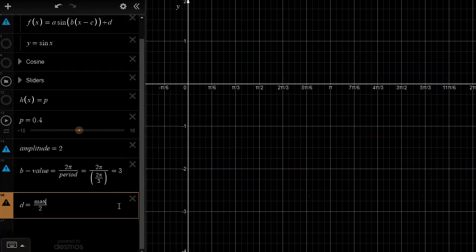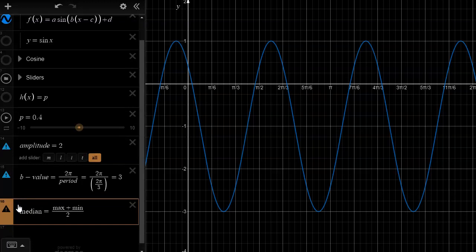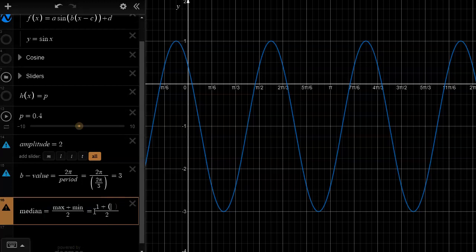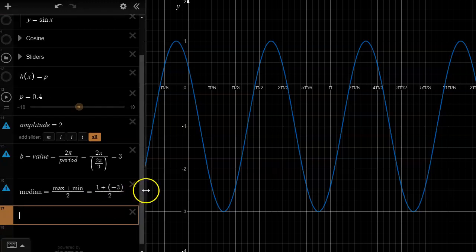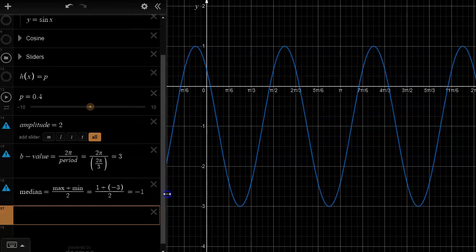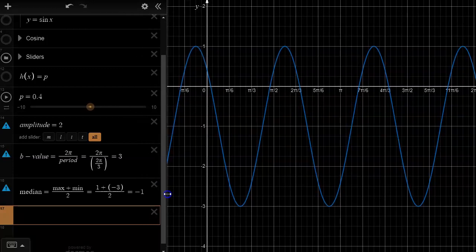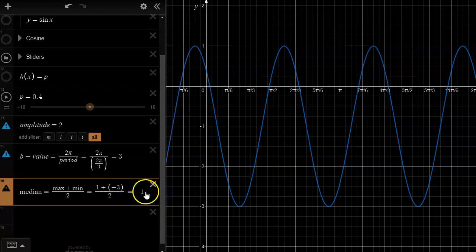If you can't eyeball it or you want to check if it's correct, you can use this formula. The median is really the max plus the min divided by 2. In this case we've got 1 is the max plus negative 3 is the min, and if we divide that by 2 we end up with negative 1.